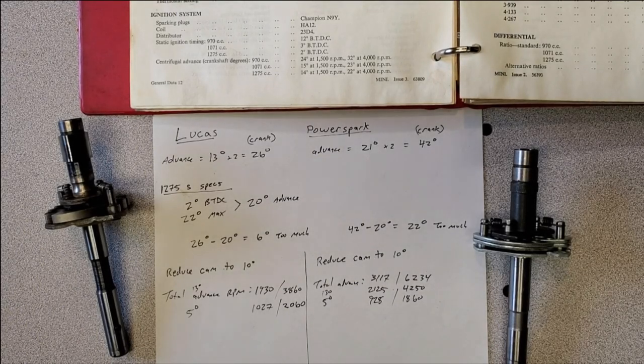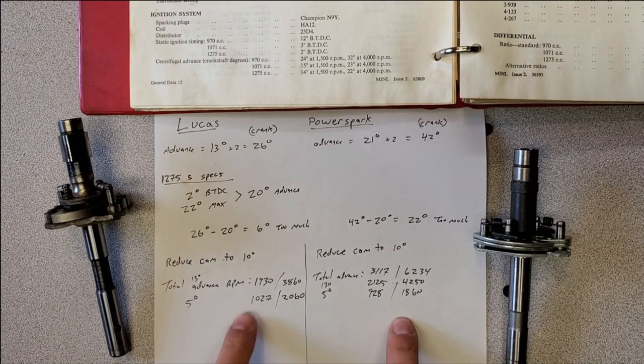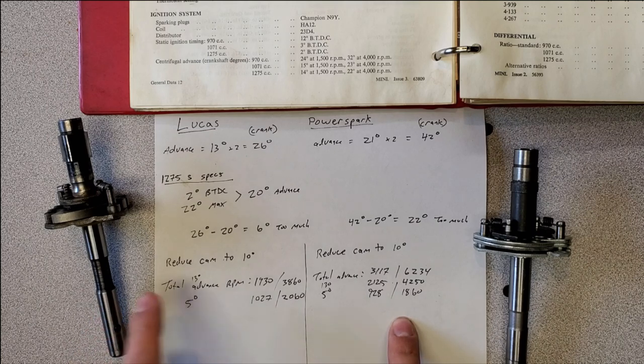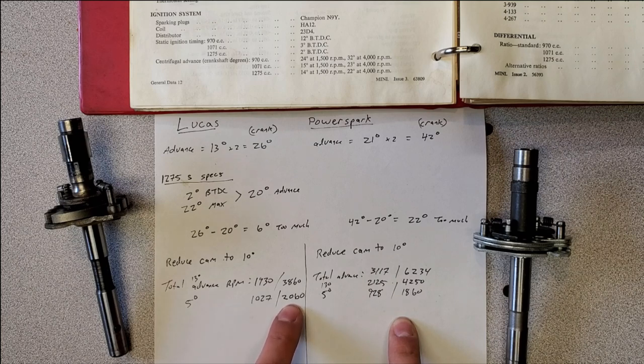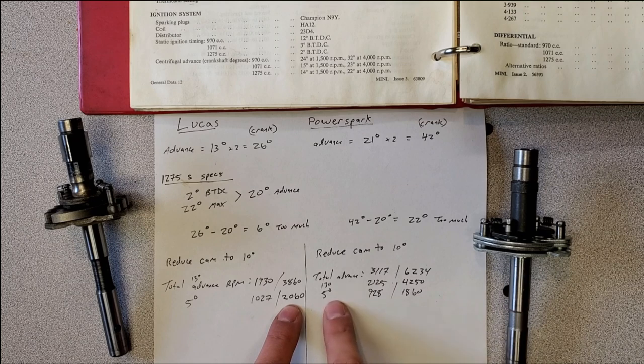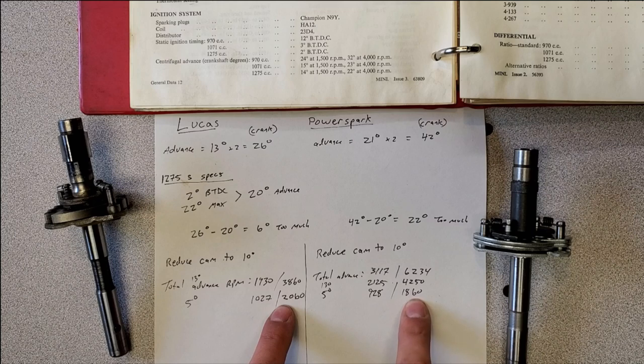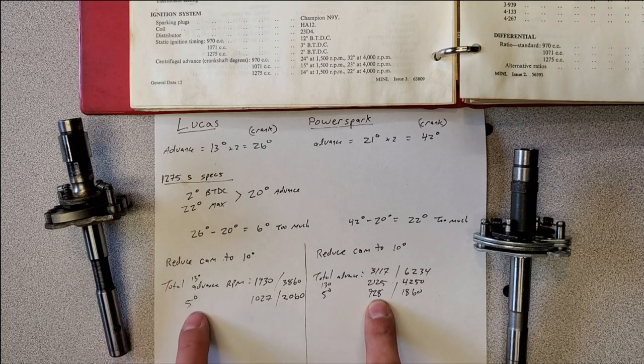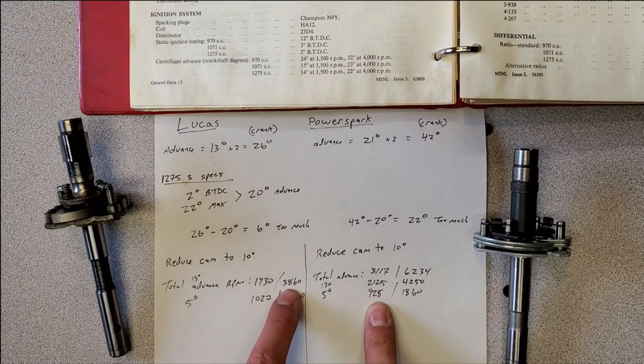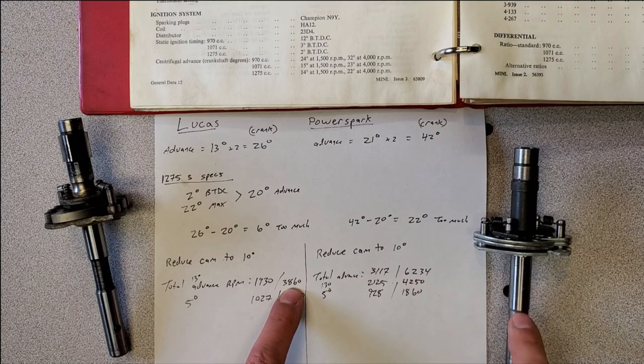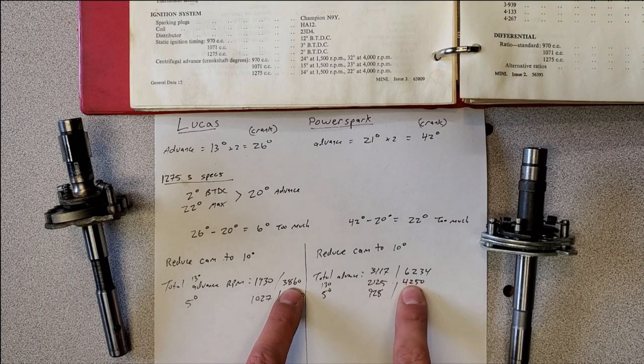Well, after checking all the advance speeds, I've written them down here. The Lucas one hit 5 degrees of distributor advance at 1,000 RPMs, which would be 10 degrees of crankshaft advance at 2,000 RPMs. The PowerSpark here, 5 degrees at 928 or 1860 RPMs. So the PowerSpark was a little slower at 5 degrees than the Lucas one. Now the Lucas one total advance was 13 degrees. It hit that at 1,930 RPMs or 3860 crankshaft speed. The PowerSpark, I measured it at 13 degrees. It was also around 4250.